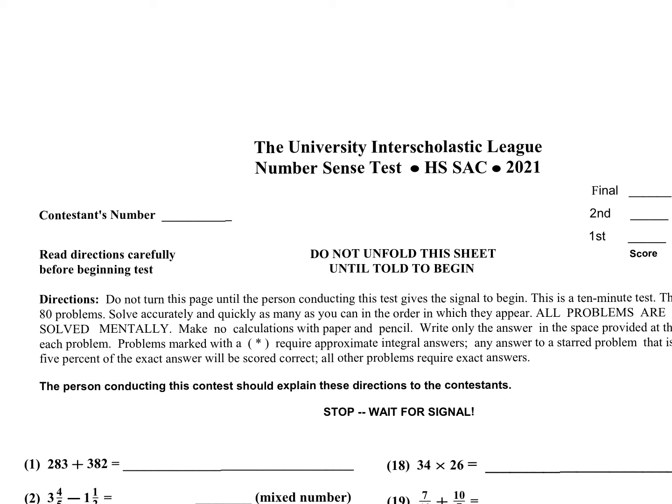Okay, in this video I'm going to go over a UIL number sense test, the high school test for the Student Activity Conference, SAC 2021, which is given actually in the fall of 2021.